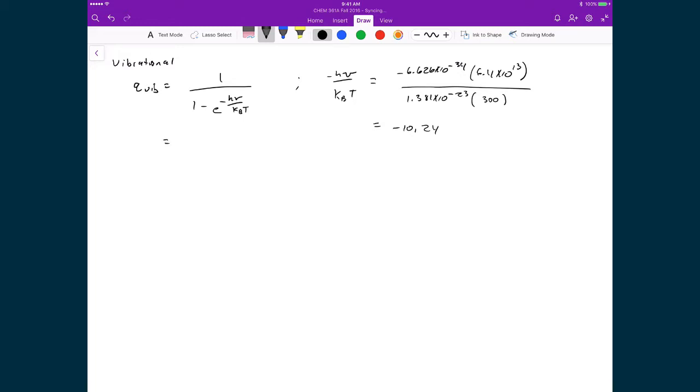What that means when I substitute that in is I'm going to get 1 over 1 minus e to the negative 10.24. Basically, this e to the negative 10.24 is going to be very, very small. So in effect, what I'm going to get is 1 over 1, and so my answer is effectively equal to 1, which again isn't something that's surprising. It's very well known that vibrational partition functions are very small, and that in this case, around room temperature, only the ground state is accessible.